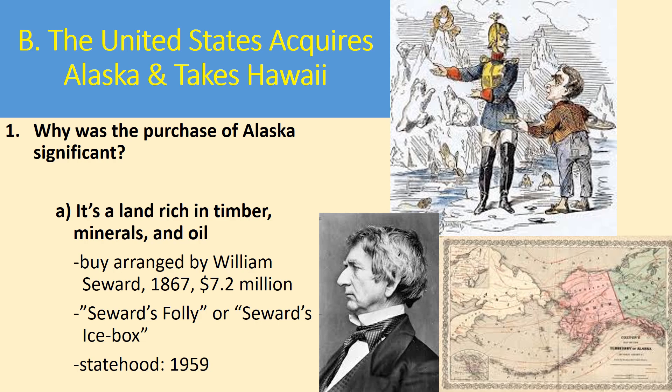In the second part of section one, we look at how the United States acquires Alaska — and notably, we don't acquire Hawaii, we kind of take Hawaii. The purchase of Alaska goes back to 1867. It was a vast, huge land that most Americans really had no idea about — they just knew Russia owned it. But it was extremely rich in timber, minerals, and resources they didn't even know yet. Probably one of the largest oil reserves in American history would eventually be found there.